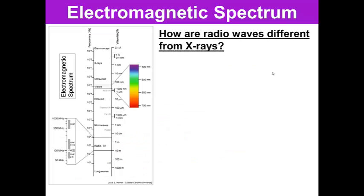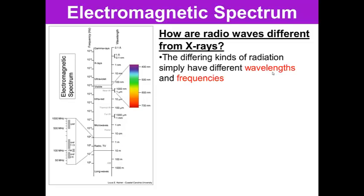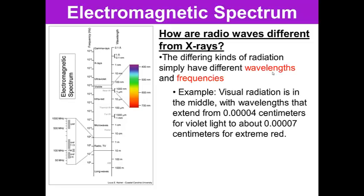How are radio waves different from X-rays? The different kinds of radiation simply have different wavelengths and frequencies. For example, visual radiation is in the middle with the wavelengths that extend from .00004 centimeters, so very small, to about .00007 for the extreme red. So there's not much of a difference, but there is enough of a difference to have one that we can see, which is the visible radiation. One is violet and the other is red. So that slight difference causes a difference in our perception of the color.